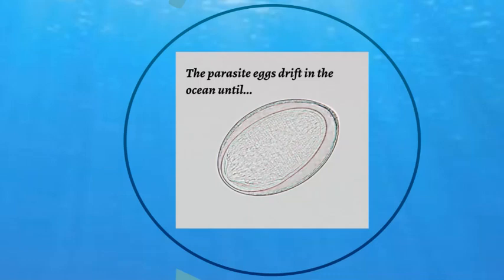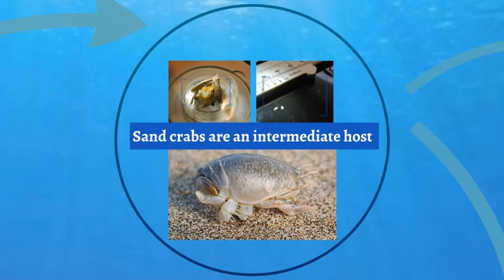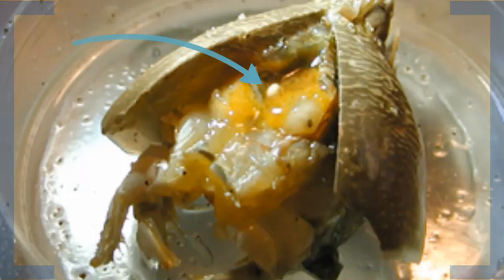In the ocean, acanthocephalan eggs float freely in the water until they are accidentally ingested by suitable intermediate hosts, meaning the host is used to grow into the juvenile stage but cannot reproduce. Sand mole crabs are filter feeders — they end up filtering and ingesting the acanthocephalan eggs and become prime intermediate hosts for the parasites. The parasites are not lethal to the mole crabs, although they could affect their behavior, perhaps making them easier prey for fish and birds.